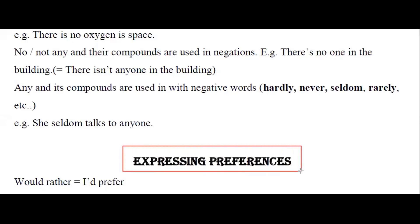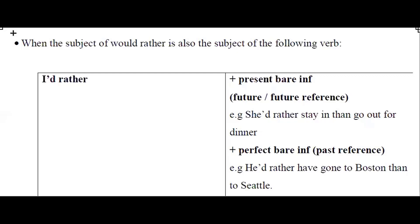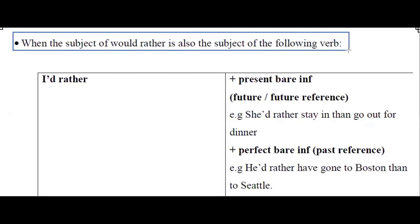Expressing preferences: you can express preferences using 'would rather', which is equal to 'I prefer'. When the subject of 'would rather' is also the subject of the following verb, we can use 'would rather' plus bare infinitive. We use 'would rather' plus bare infinitive to express future or present preference. For example: 'She would rather stay in than go out for dinner.'